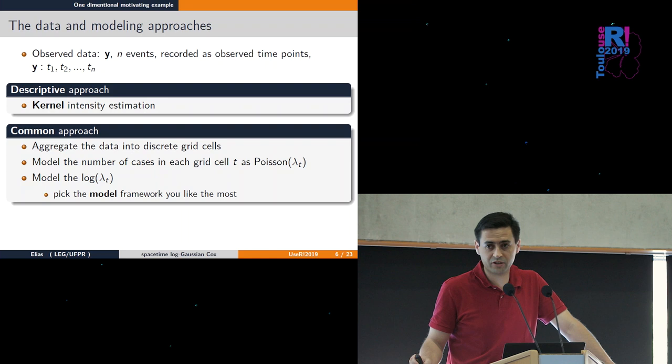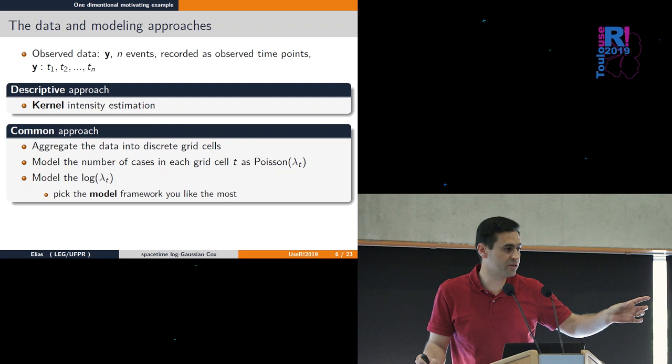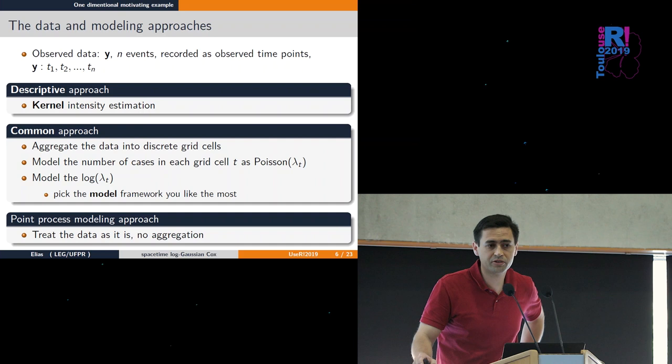But aggregation discretizes your data - you no longer have exact event timing. Our approach uses a point process where we have the data as-is without any aggregation.